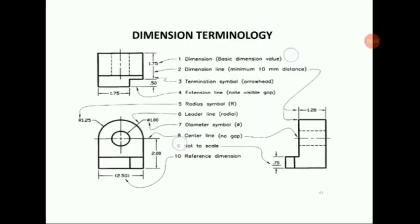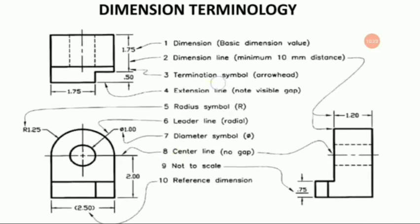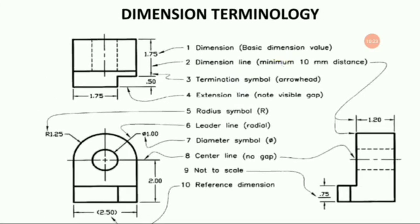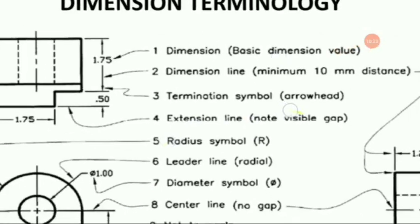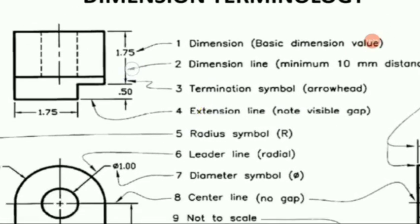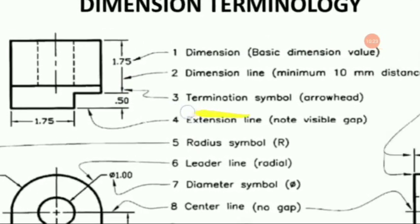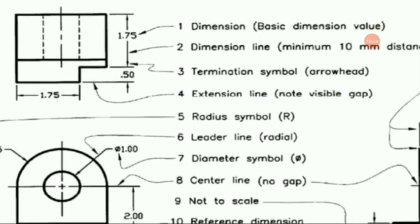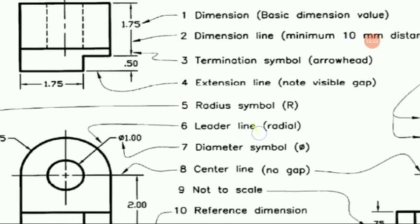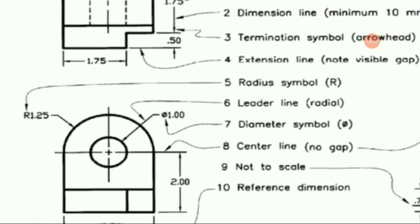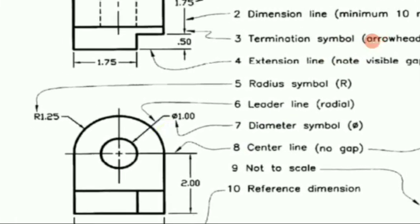In dimension terminology, the first term is the basic dimension value — the number that denotes the basic dimension. The dimension line distance should be a minimum of 10 millimeters. The arrowheads symbolize the termination symbol. The extension line is also shown — note the visible gap. The radius symbol is capital R, and the leader line is the inclined straight line.